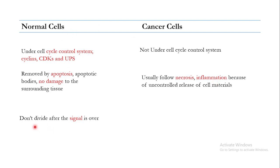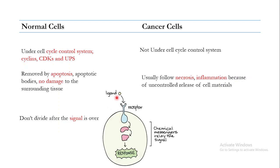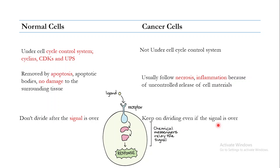Another important difference is that normal cells do not divide after the signal is over. In normal cell division, there will be a ligand or a signal that binds to its receptor. When the signal binds to its receptor, a chemical cascade of messengers is activated, and in the end a response is generated — in this case, the division of the cell. This means that in normal conditions, if there is no signal, the receptor is not activated and the cell does not divide.